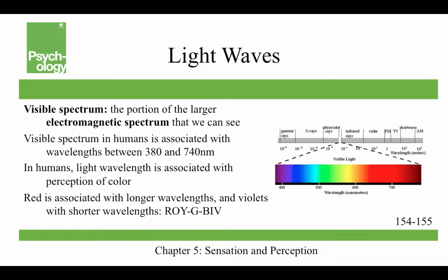The visible spectrum is the portion of the larger electromagnetic spectrum that we can see as humans — wavelengths between 380 and 740 nanometers. This light wavelength in humans is also associated with the perception of color. Other species, like honeybees, can see light in the ultraviolet range, but we cannot, at least not without special glasses or goggles.